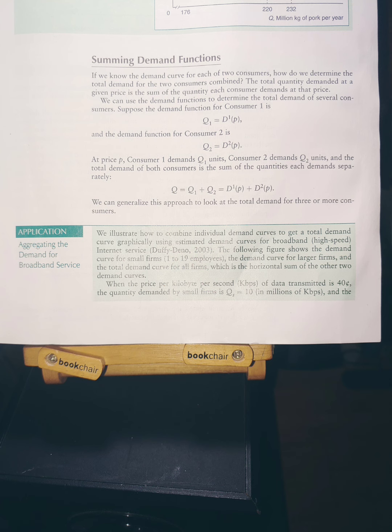Application: Aggregating the demand for broadband service. We illustrate how to combine individual demand curves to get a total demand curve graphically using estimated demand curves for broadband high-speed internet service. The following figure shows the demand curve for small firms (1 to 19 employees), the demand curve for larger firms, and the total curve for all firms, which is the horizontal sum of the other two demand curves.